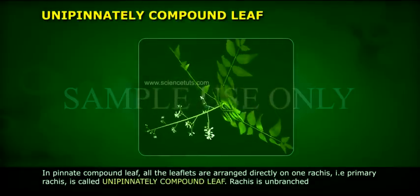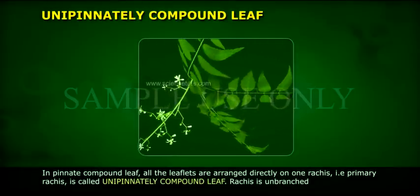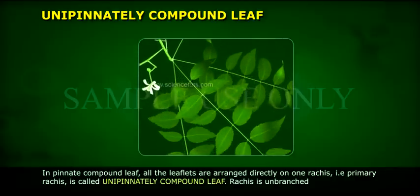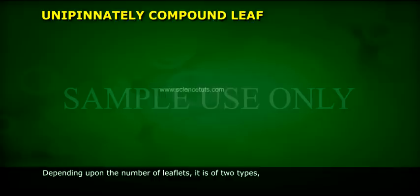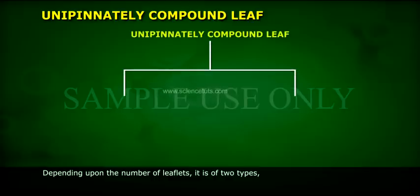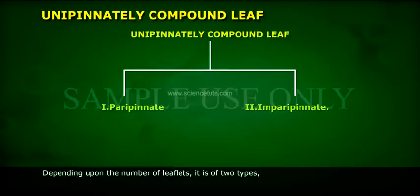Unipinnately compound leaf: all the leaflets are arranged directly on one rachis, that is, the primary rachis — this is called a unipinnately compound leaf. The rachis is unbranched. Depending upon the number of leaflets, it is of two types: 1. Paripinnately, and 2. Imparipinnately.